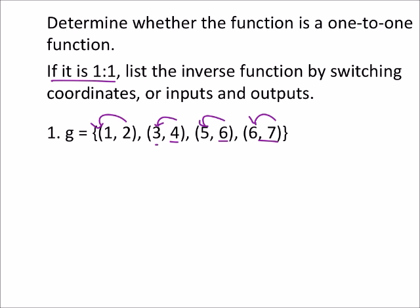Now it says if it is one-to-one, then we need to find its inverse function. So the way this is notated is that you'd have g of negative one. That is not an exponent. That is just an indication that it's inverted, kind of as if it were reciprocated.